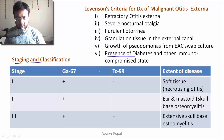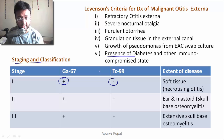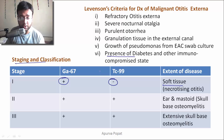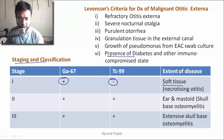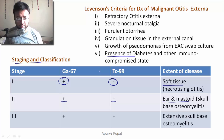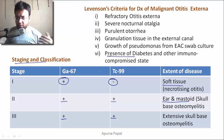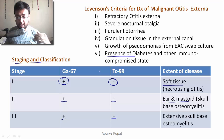For staging: if the Gallium-67 scan is positive but Technetium-99 is negative and there is only soft tissue involvement, it is Stage 1 — necrotizing otitis externa. If both scans are positive with involvement of the ear and mastoid, it is Stage 2 — skull base osteomyelitis. If both are positive with extensive involvement of the skull, it is Stage 3 — extensive skull base osteomyelitis.